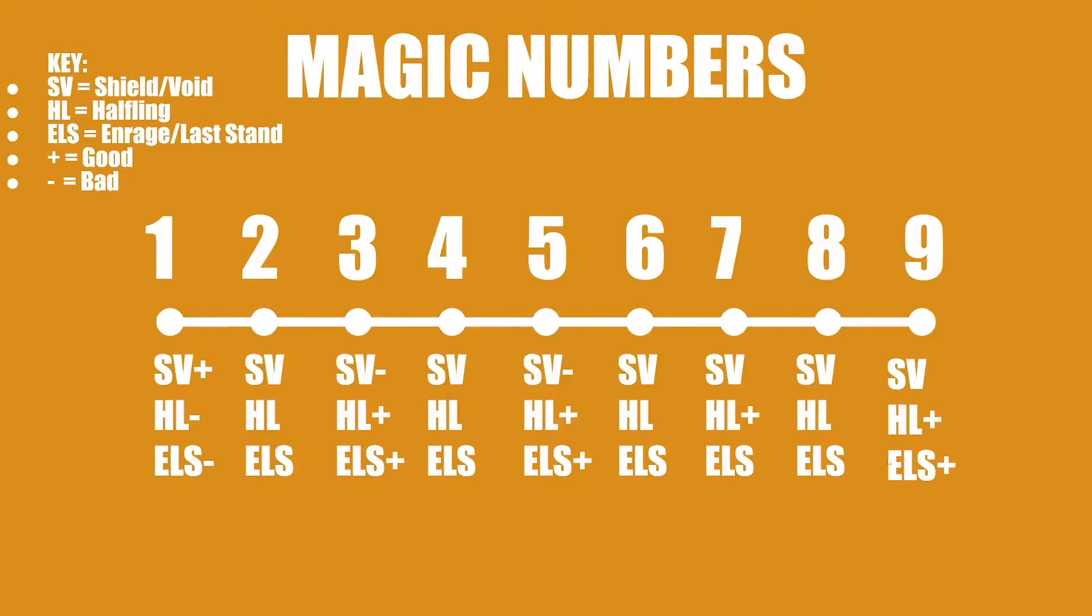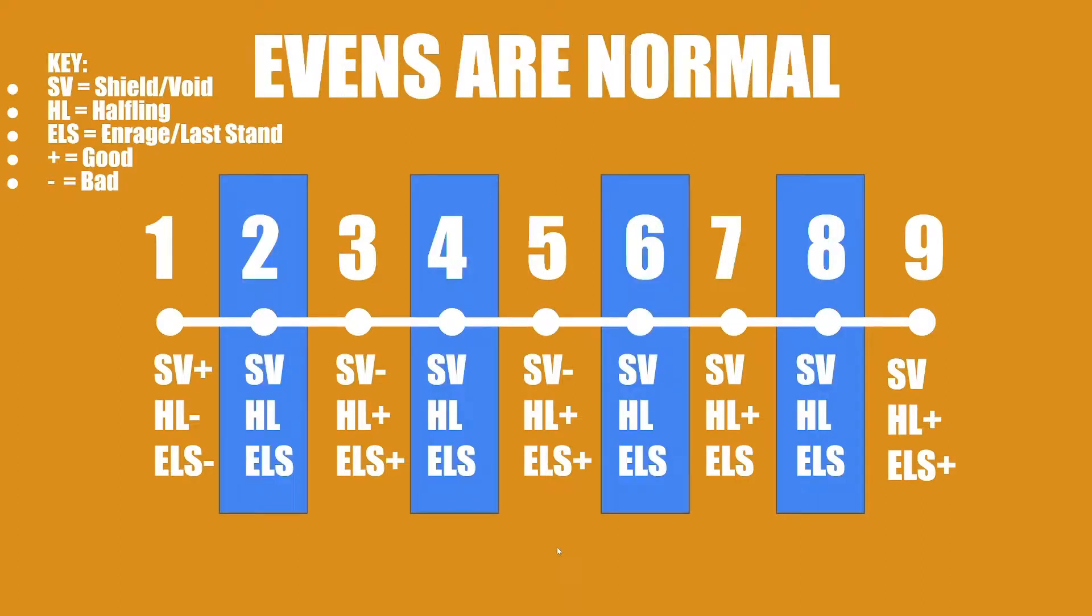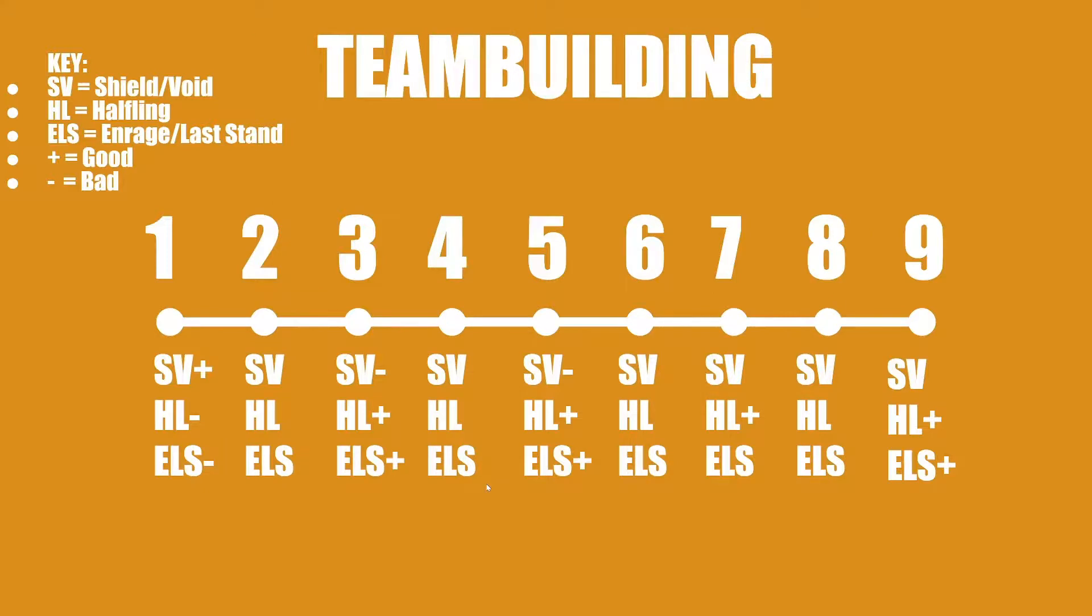Enrage/Last Stand amazing at nine. Not sure why I didn't put it at seven, but you're not going to realistically reach these numbers before Enrage/Last Stand. If you do, then you're a genius or you have like diamond-level cards. But I'm thinking of bronze and silver right now. So evens, like I said, are normal. You can see this in this infographic.